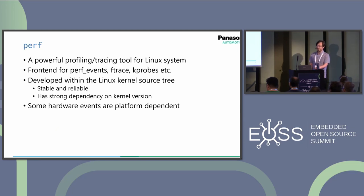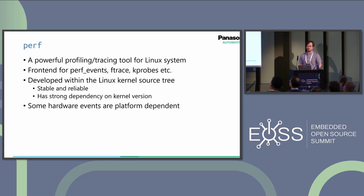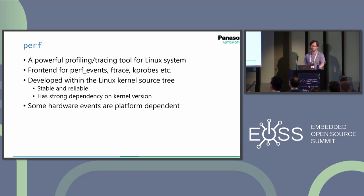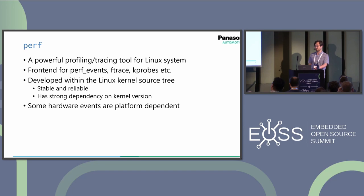The first tool is Perf, which is a profiling and tracing tool for Linux systems, as many of you may already know. Perf acts as a front-end for various tracing technologies in Linux such as PerfEvents, FTrace, and KProbes. It's developed within the Linux kernel source tree, which ensures it is stable and reliable. However, Perf has a strong dependency on the kernel version, which may impact its compatibility across systems. Additionally, some hardware events supported by Perf are platform-dependent, which may limit its usability in certain cases, for example, on ARM platforms.